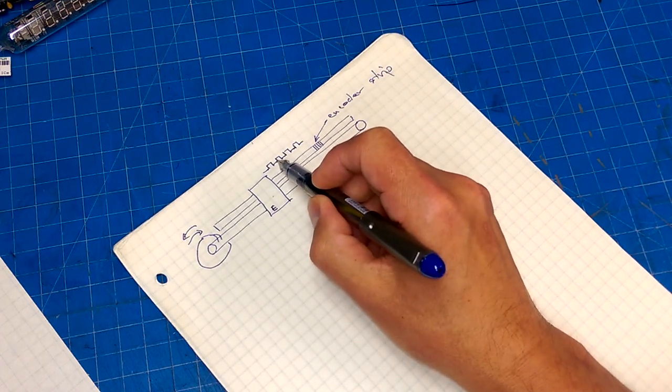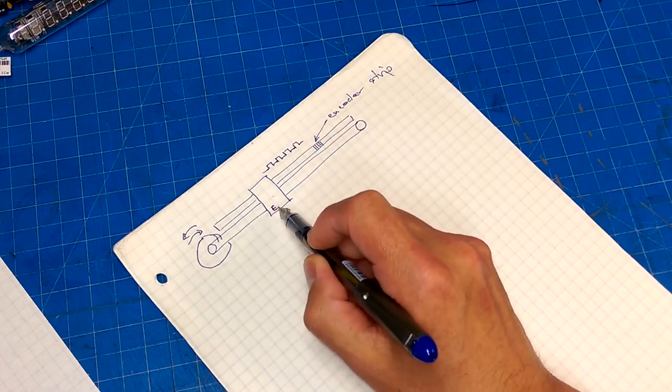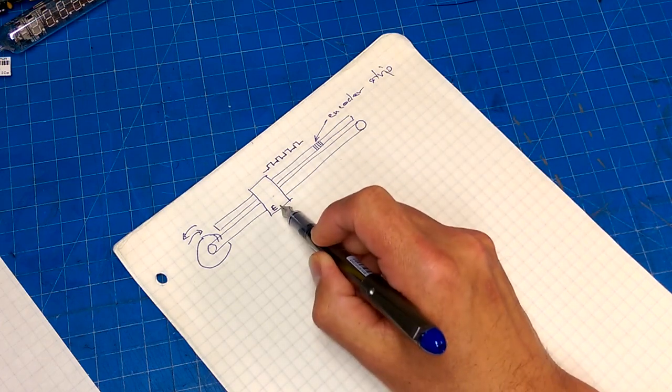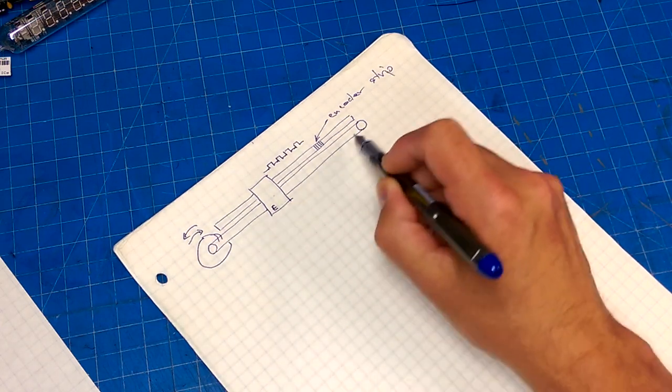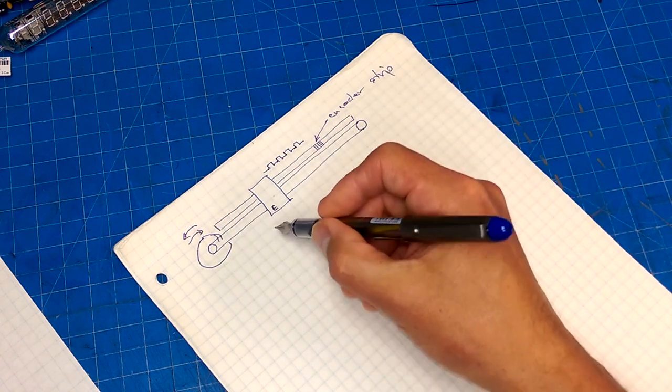And you can also, by counting these pulses, figure out what position this, well, we're going to call it printhead, but the effector has anywhere along the bar.